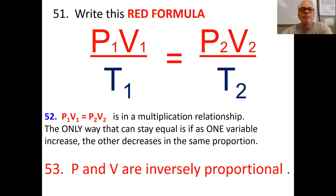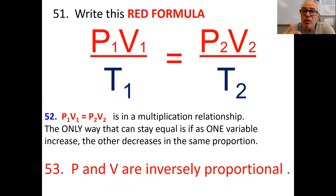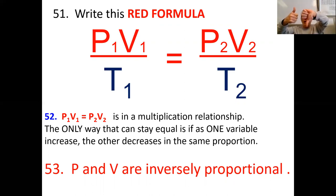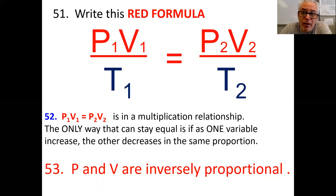The red formula — only across the top — is P1 V1 equals P2 V2. This is a multiplication relationship: pressure times volume original equals pressure times volume new. Temperature is constant so we can cancel it. In order for the multiplications to stay equal, one goes up and one goes down. The only way it stays equal is if pressure goes up and volume goes down, or reverse.